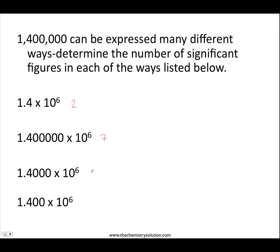I've also written this value two more ways, in case you want to demonstrate that only some of the zeros are significant. In one version we have three significant zeros and five significant total figures. And in the last value, only two of those zeros are significant, so we have four total significant figures.